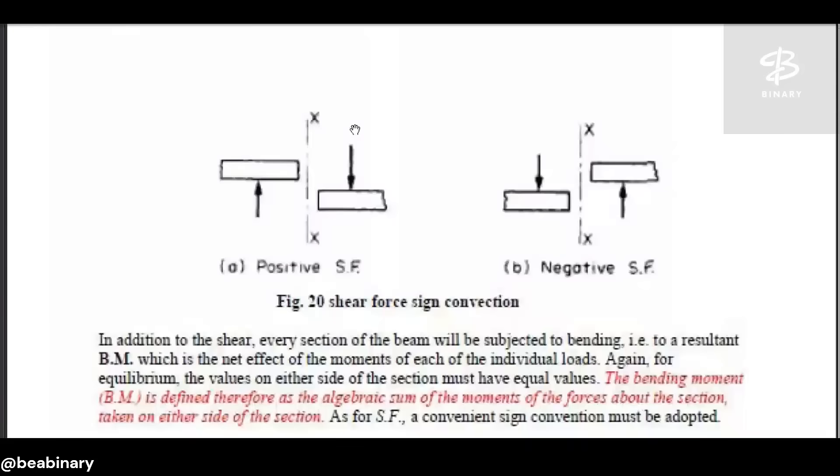In addition to shear, every section of the beam will be subjected to bending. That is to a resultant bending moment, which is the net effect of the moments of each of the individual nodes.